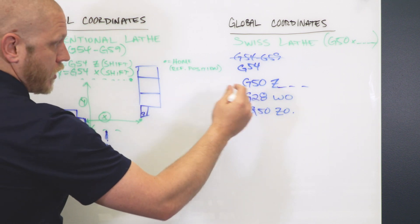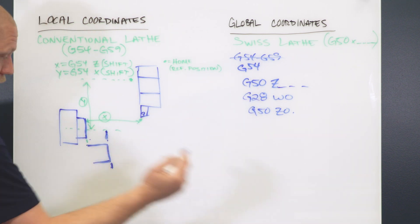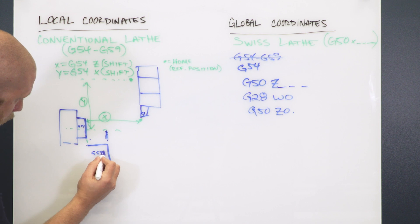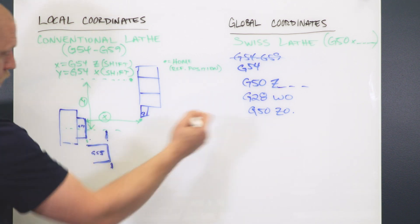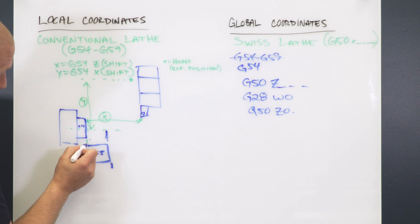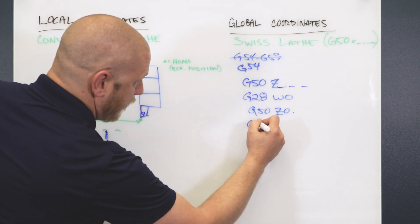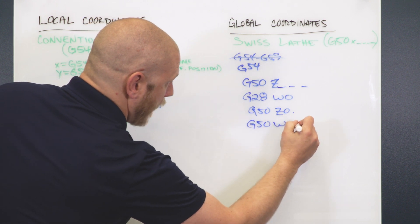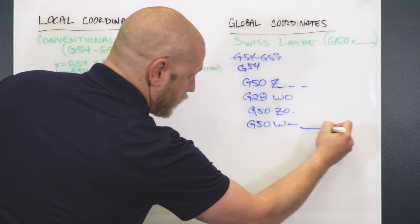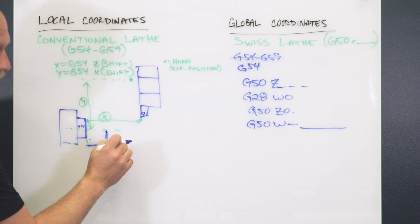You can also shift relatively from the last place. So for example, in this, this distance would be G54 and this is G55. What I would do here on a Swiss machine, this would be my normal Z0 at the beginning of my program. If I wanted to feed out this distance, I could say G50 W minus the amount that I actually fed my material out.